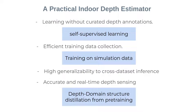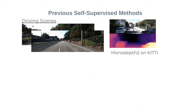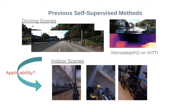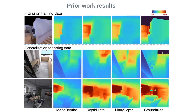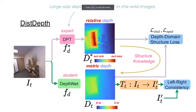We propose a depth domain structure distillation from pre-training. Popular existing methods on self-supervised learning mainly focus on driving scenes; however, their applicability on indoor scenes has not been investigated much. We first show previous methods can fit training data well, but they generalize to testing data poorly. Then we introduce our DiS-Depth framework.